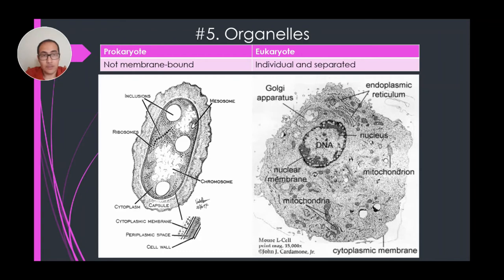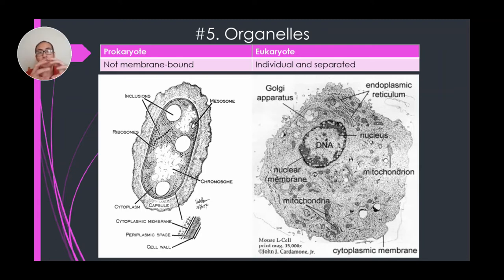Number five: organelles. The word means 'little organs' — small functional structures within the cell. Both prokaryotes and eukaryotes have organelles. The difference is that eukaryotic organelles are membrane-bound, meaning they have a cover to differentiate them within the cell. Prokaryotes, being so small, don't have that many organelles and they are free-floating within the cell — they don't need to be as complex.